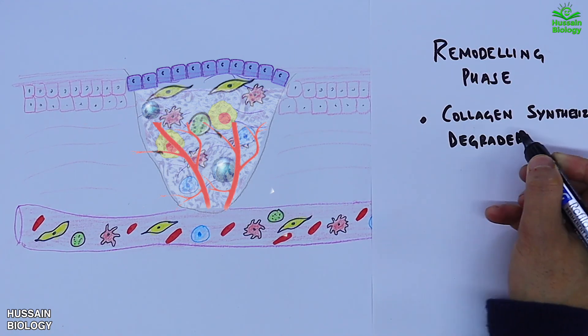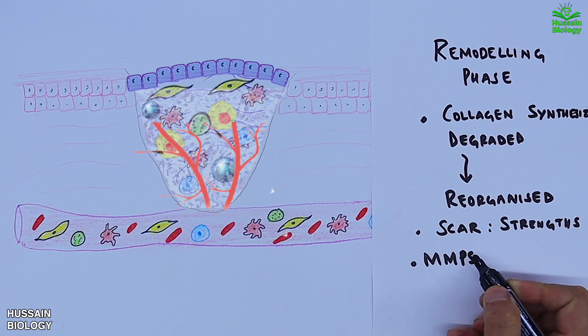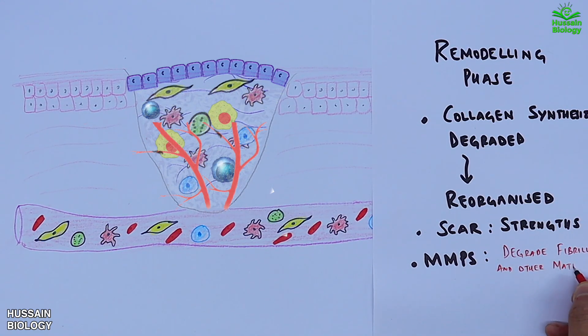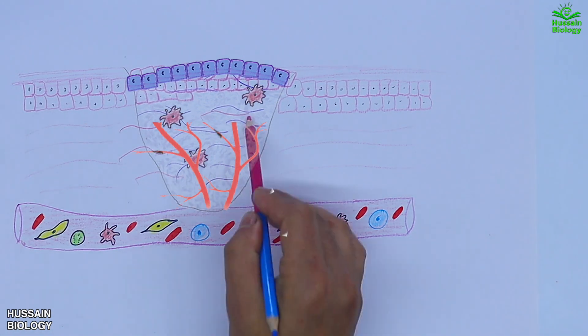Then the collagens are degraded and reorganized and scar strengthens. Moreover, we see MMPs degrade fibrillin and other matrix proteins, which takes this wound site near to its original state—not completely, but 50 to 60 percent of its original state.